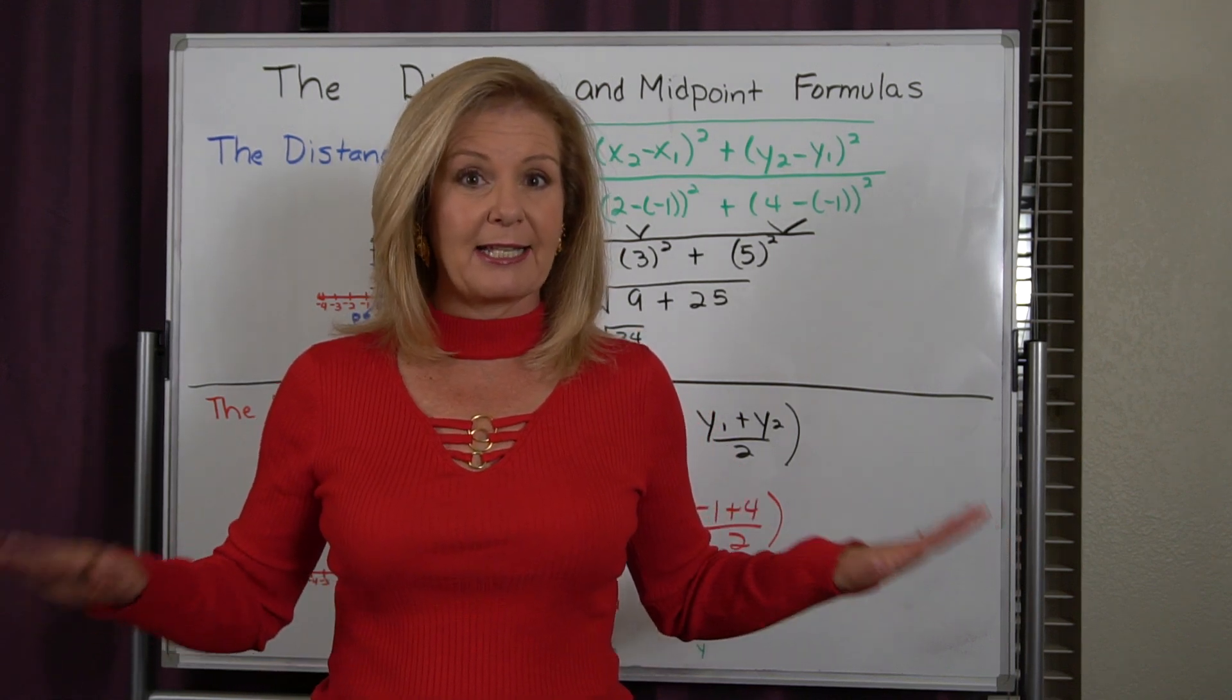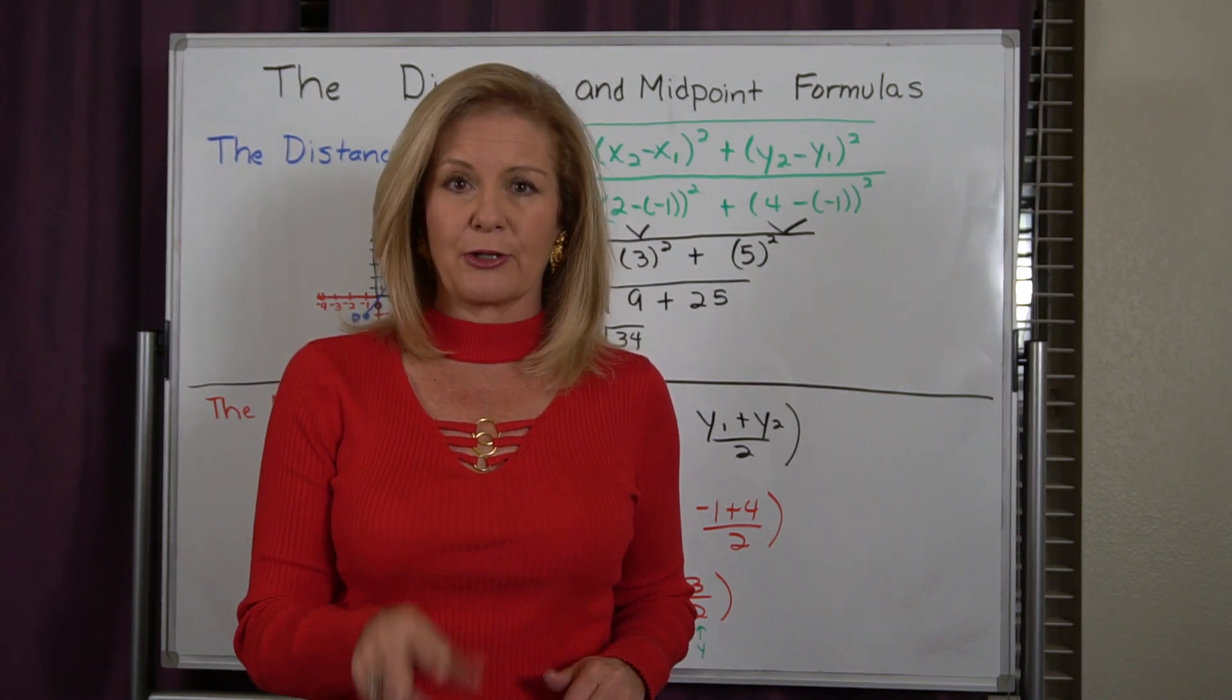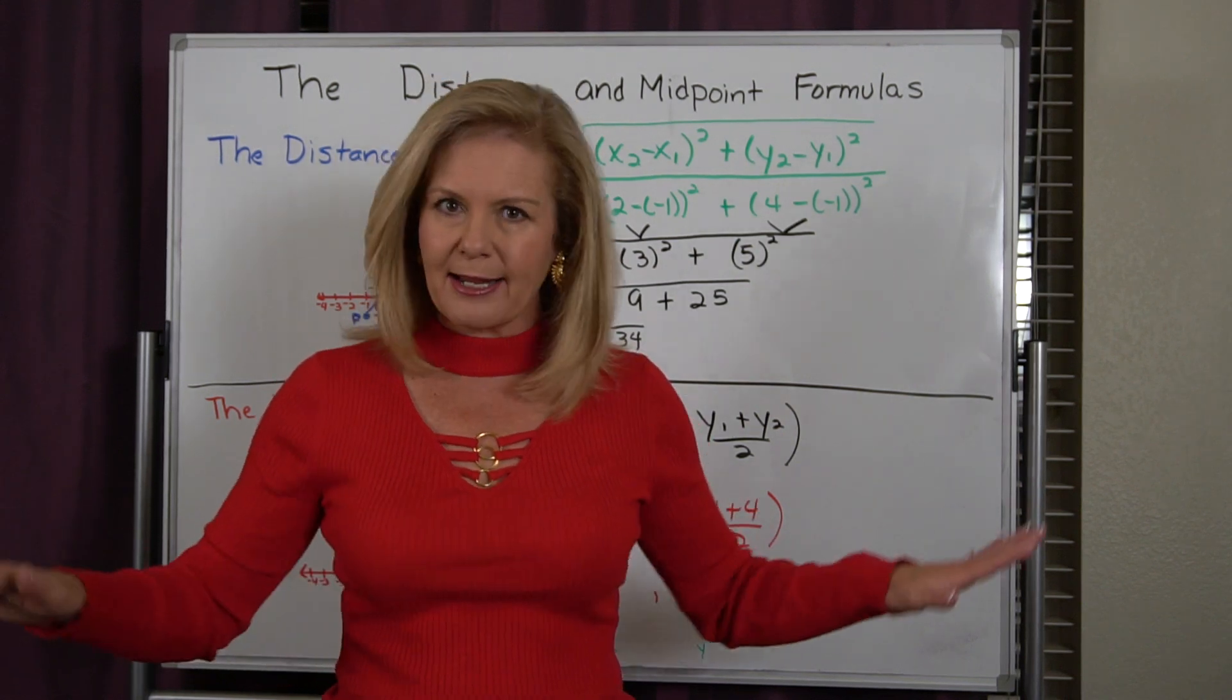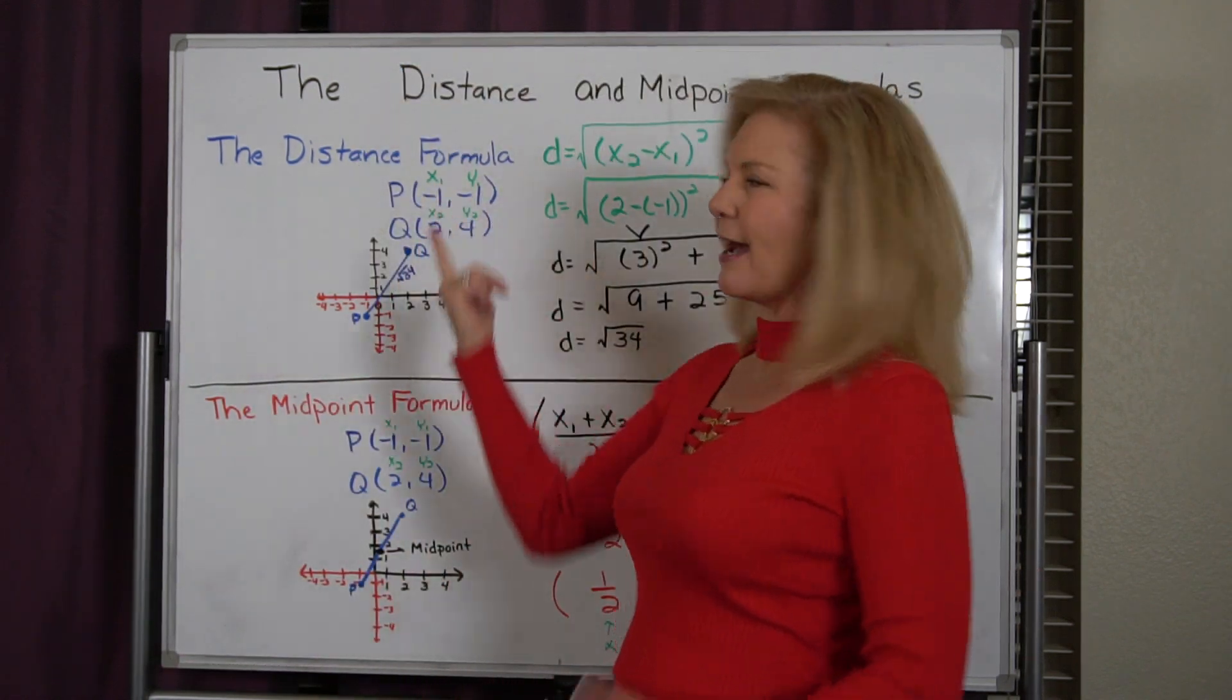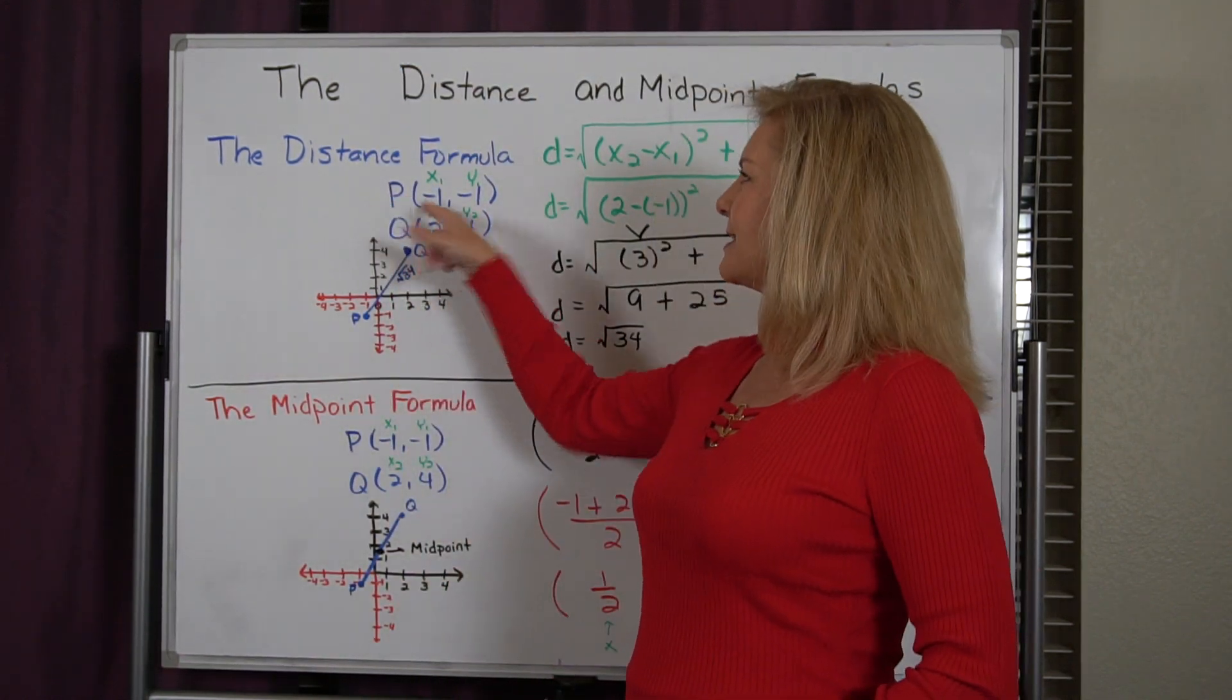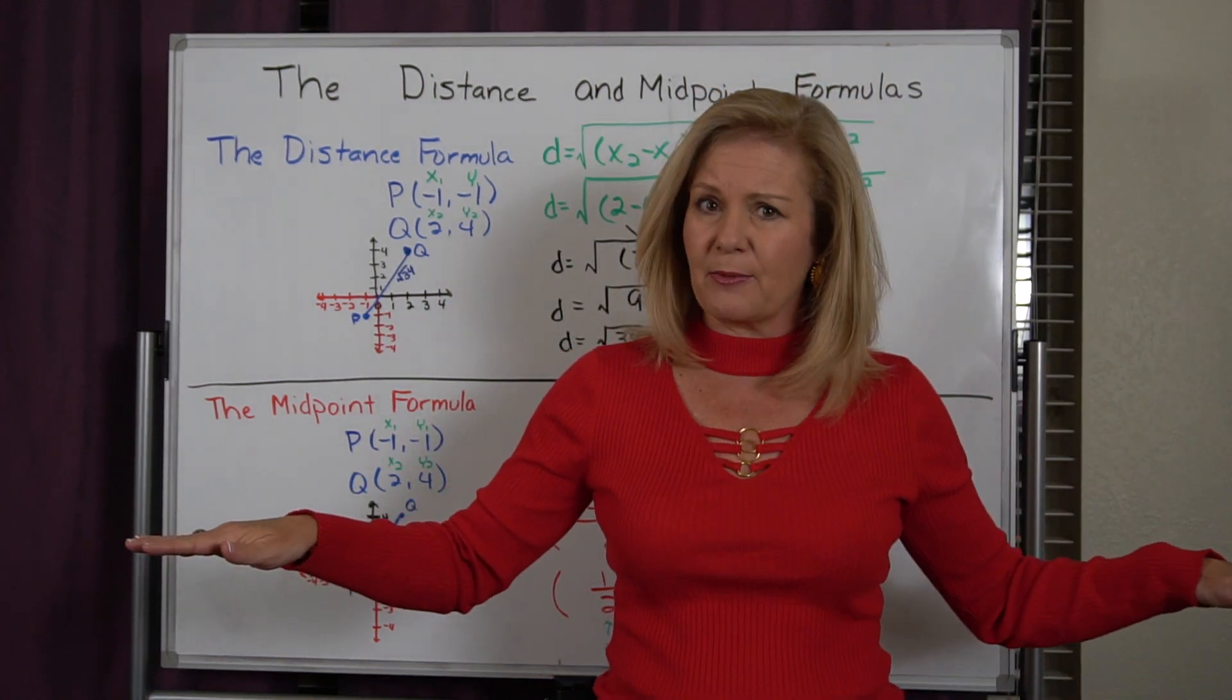The big difference that is going to happen today is we are only going to be given two ordered pairs for points. We're not going to have the triangle drawn for us at all. Say we have this ordered pair: P is (-1, -1) and Q is (2, 4). And that's all the information that we have.